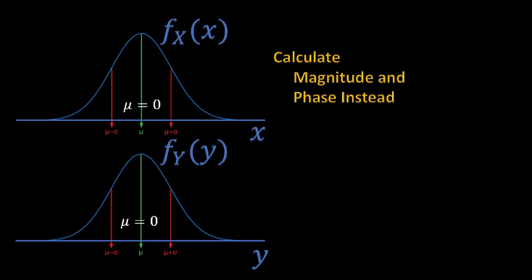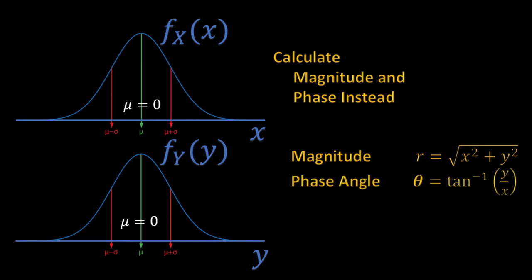That is, we can have the following relations. For magnitude, we have r which is equivalent to the square root of x-square plus y-square. And for phase angle, that is theta, we have tan inverse y by x.